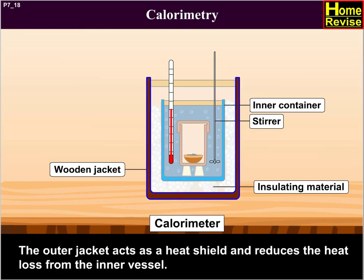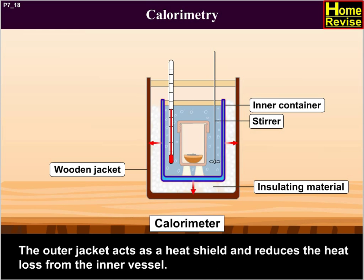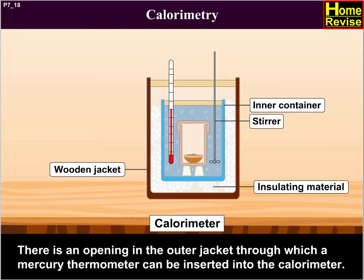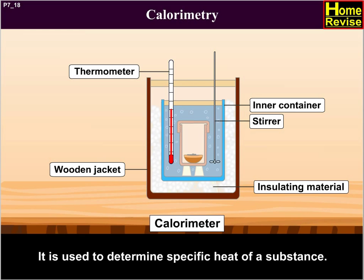The outer jacket acts as a heat shield and reduces the heat loss from the vessel. There is an opening in the outer jacket through which a mercury thermometer can be inserted into the calorimeter. It is used to determine the specific heat of a substance.